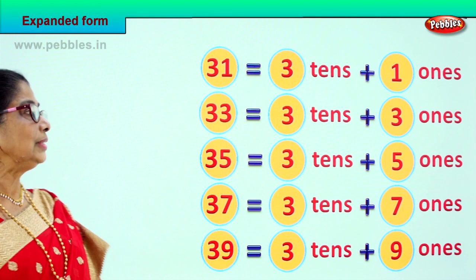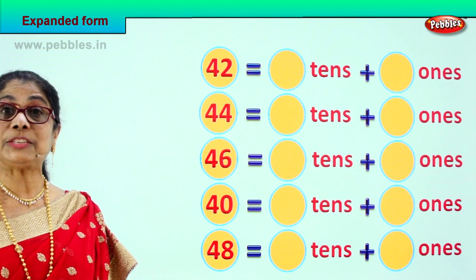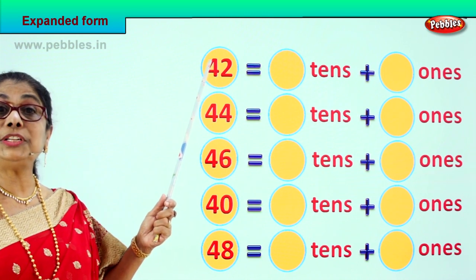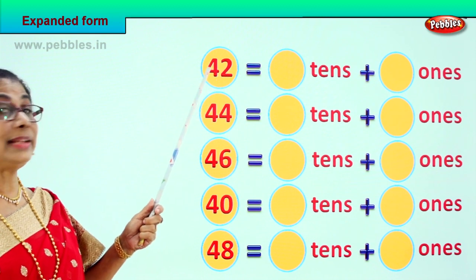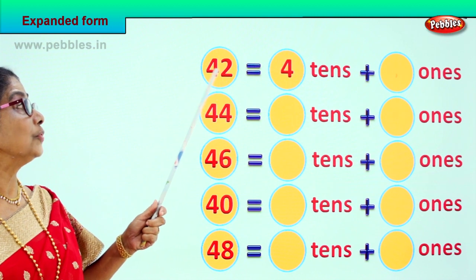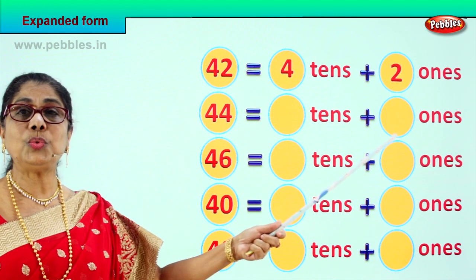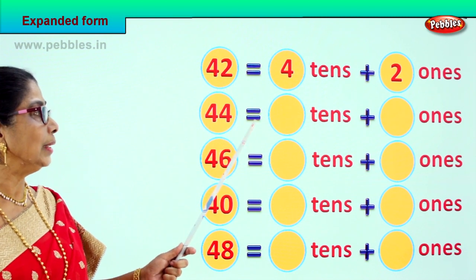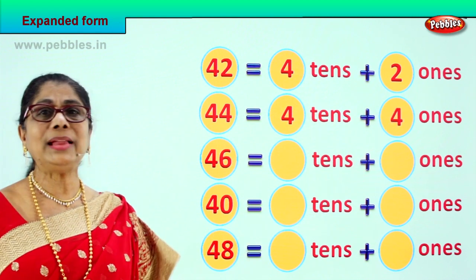Good! Let's look at another set of numbers and expand them together. What is this? 42. Ones place, tens place. How many tens? 4 tens and 2 ones. 42 is 4 tens and 2 ones. 44 is equal to 4 tens plus 4 ones.